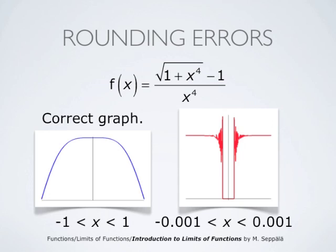Here I have plotted the graph of f of x equals square root of 1 plus x to the fourth minus 1, divided by x to the fourth. Between negative 1 and 1, the graph looks nice, round, and smooth, and has a limit as x approaches 0. But when one zooms in near 0, the graph looks like the red graph here. This red graph does not show the values of the function — it shows rounding errors. So one cannot make any conclusions by computing the values of the function near 0 because of rounding errors.